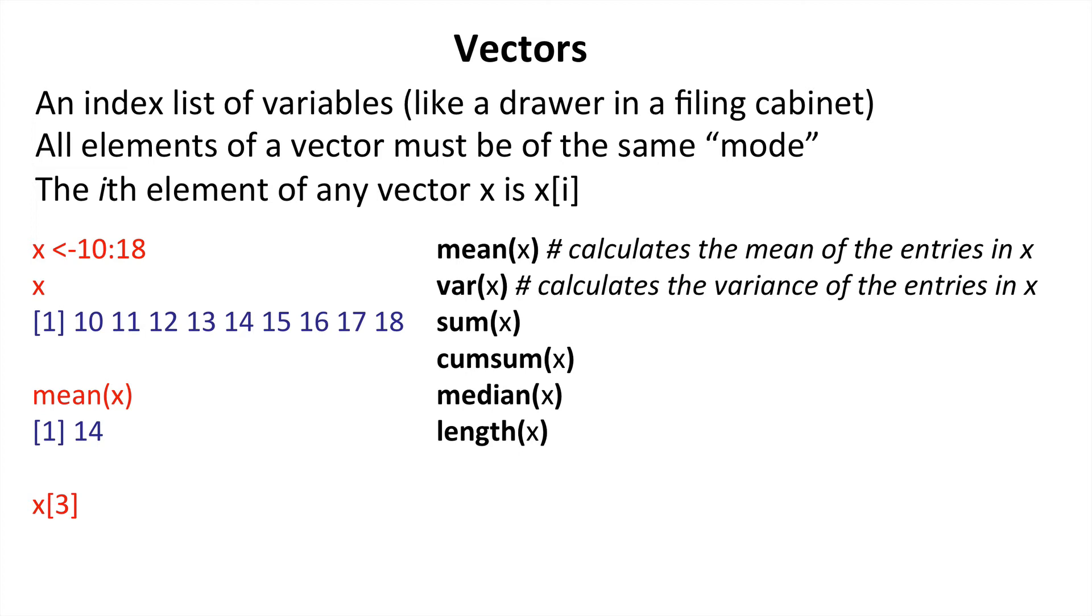If we refer to the element of a particular vector, like x square brackets 3, then that implies we are asking for the third element in that vector, in which case the answer would be 12. So, round brackets in this case contain the objects of functions like the sum or the mean, where square brackets refer to the index of that object, indicating what is the element value at that particular location.